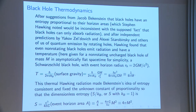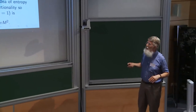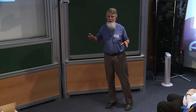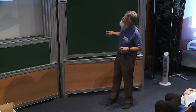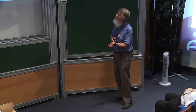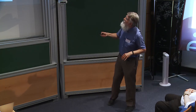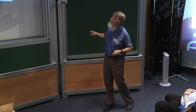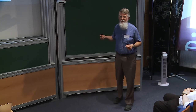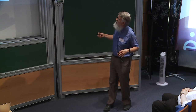After suggestions from David Bekenstein that black holes have entropy proportional to their horizon area — which Hawking originally noted would be inconsistent with the then-believed fact that black holes can only absorb radiation — then, after independent predictions by Zeldovich, Starobinsky, and others, including Larry Ford and myself, that rotating black holes would emit, Hawking heard about this, didn't like their derivation, redid it, and found that even non-rotating black holes emit radiation and have a temperature.